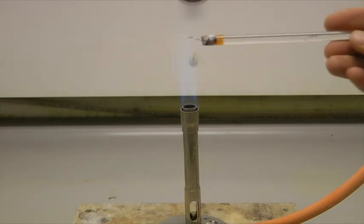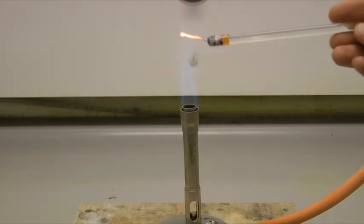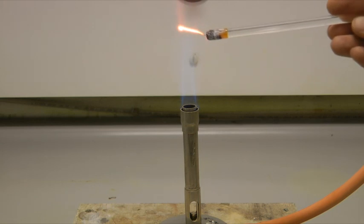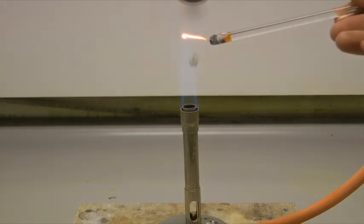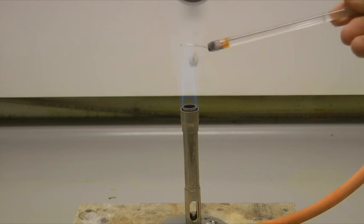First we need to clean the wire we are using to carry out the flame test which is normally made from nichrome or platinum. The wire should be passed through a roaring Bunsen flame until no further coloured flame is observed.